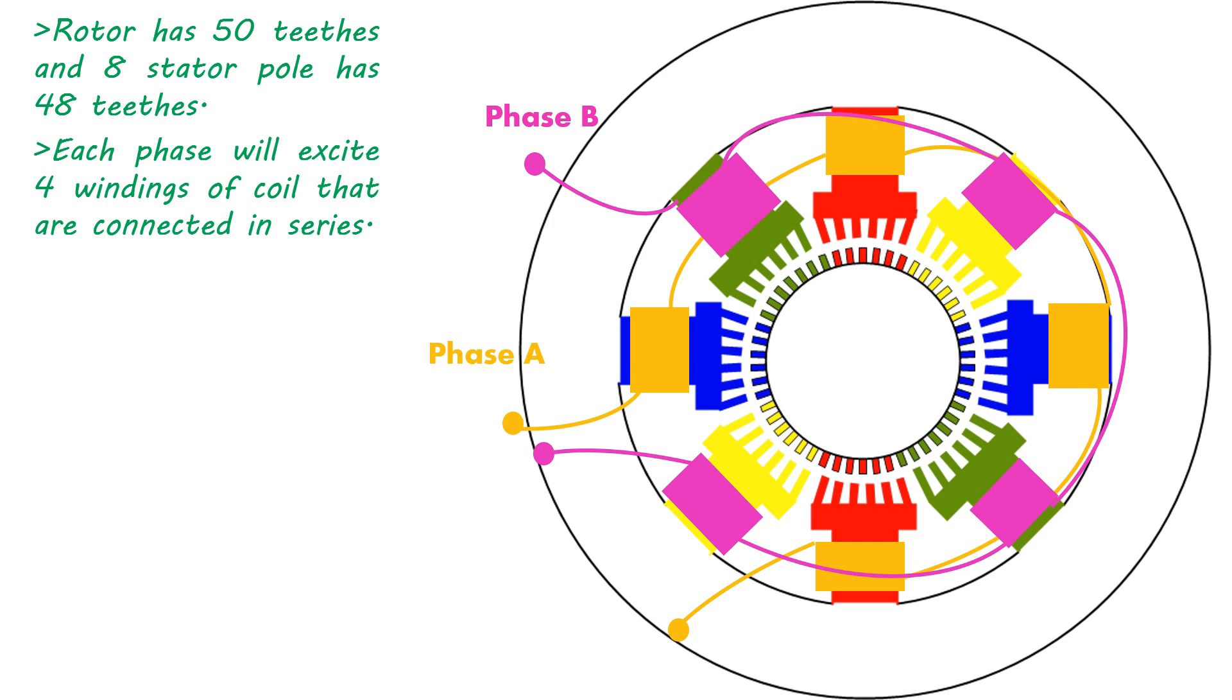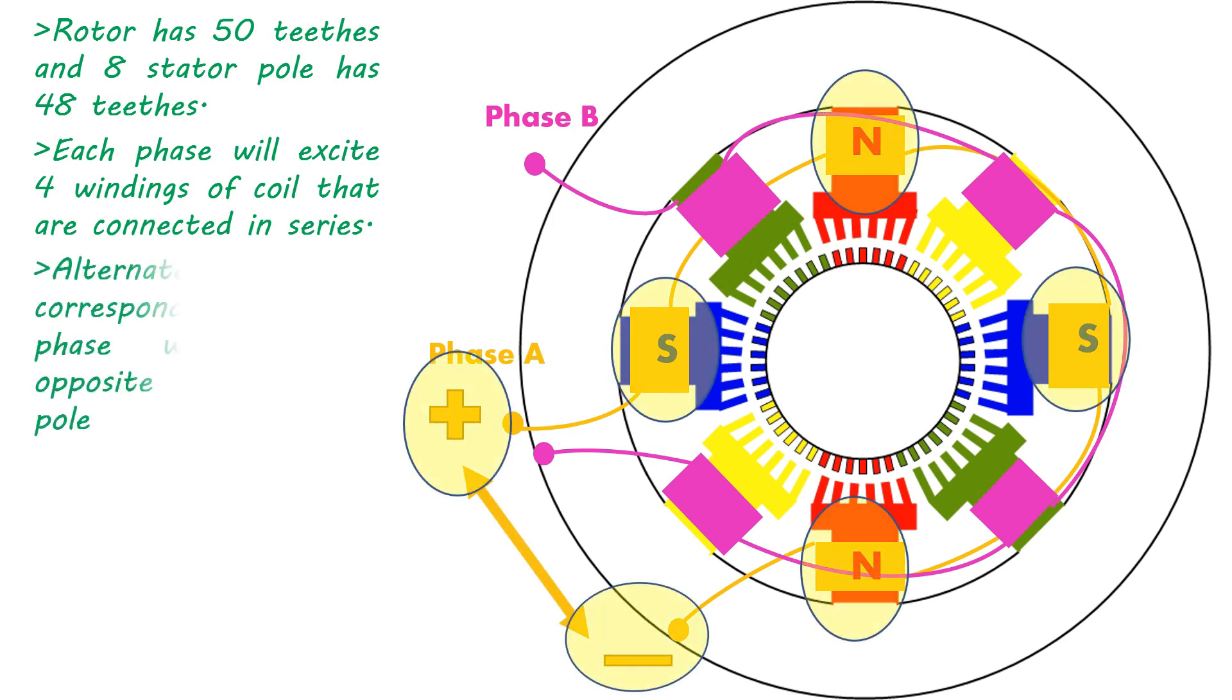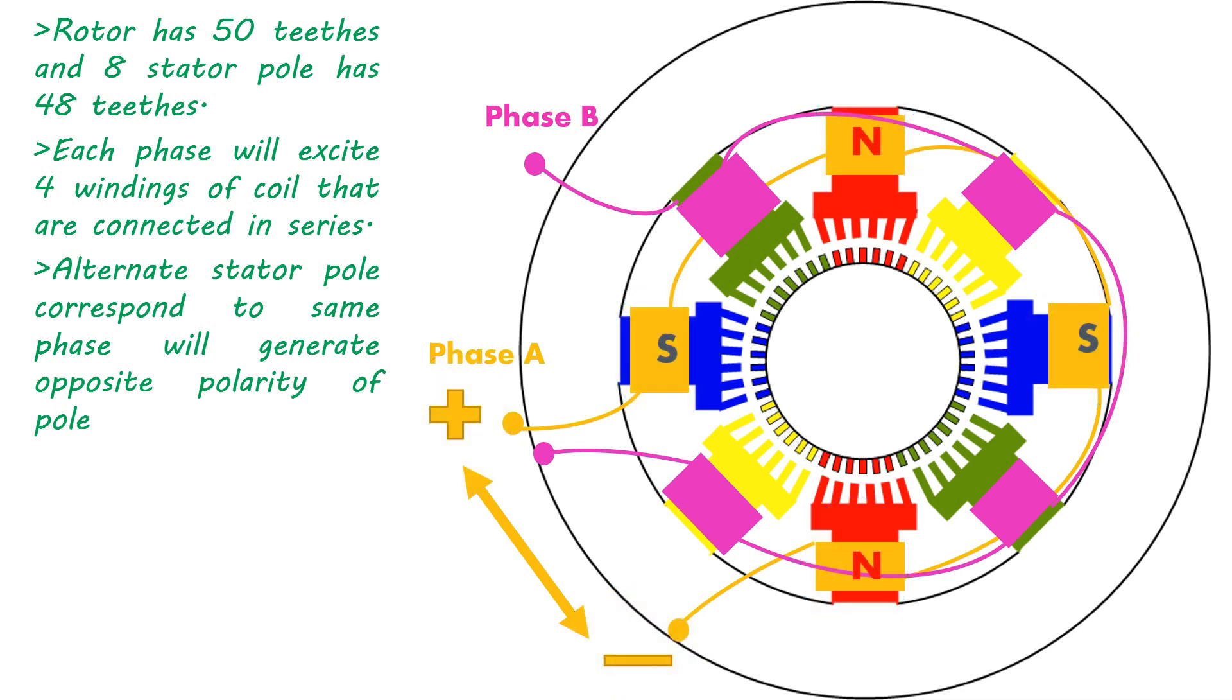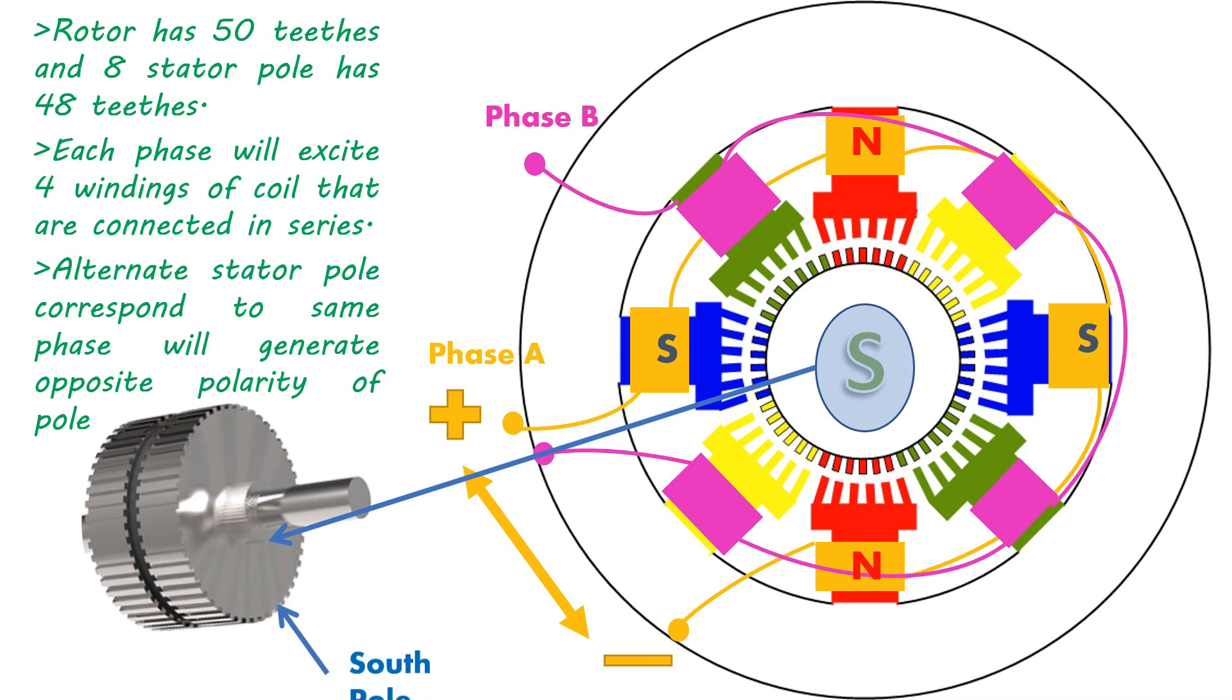Winding coils are wound so that an alternate stator pole corresponds to the same phase will generate opposite polarity of the pole. Of course, the polarity can be reversed by reversing the excitation. Notice that the rotor end that we can visualize from this end as south pole, while the north pole is on the back side and cannot visualize from this end.